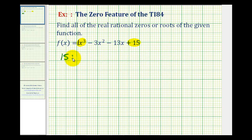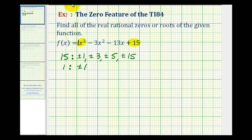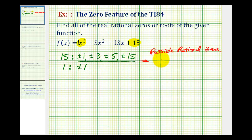The factors of 15 would be positive or negative one, positive or negative three, positive or negative five, and positive or negative 15. All of these would divide evenly into 15. For the factors of positive one, we would just have plus or minus one. If we form a ratio using these factors, with the denominator of plus or minus one, the possible rational zeros would just be the factors of 15: plus or minus one, plus or minus three, plus or minus five, and plus or minus 15.